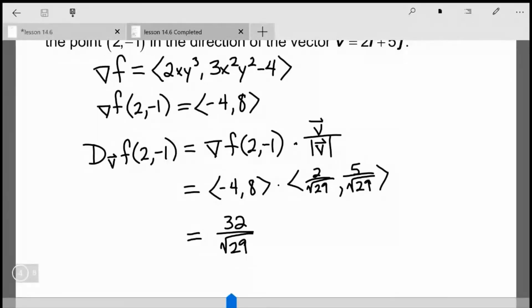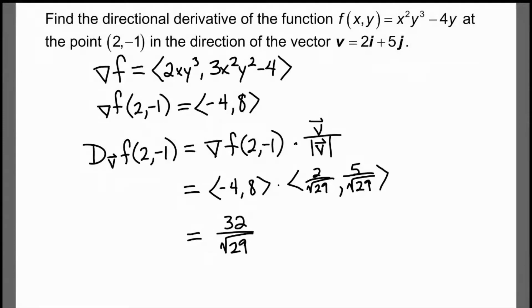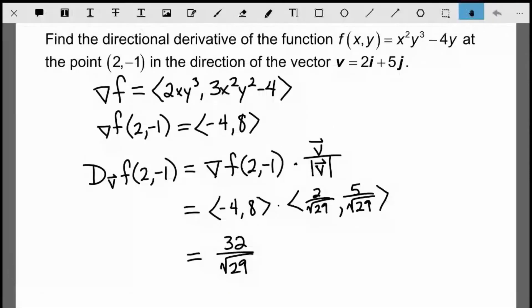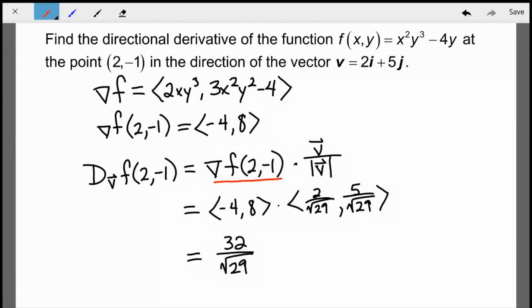Here's the worked solution. The gradient vector ∇f has the x partial and y partial as components. Evaluating the gradient at (2, -1) gives components -4 and 8. Since v is not a unit vector, I write the unit vector in the direction of v as v divided by its magnitude. Performing the dot product gives 32 over the square root of 29 — that's the exact rate of change in the direction of vector v.